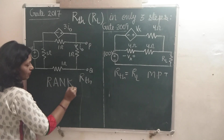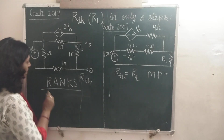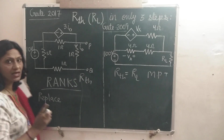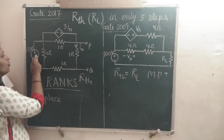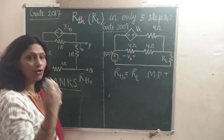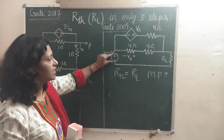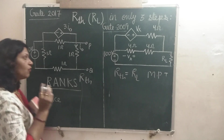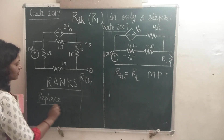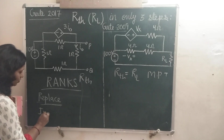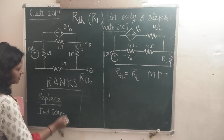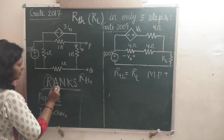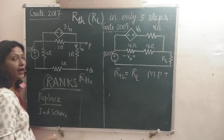You must remember these five words to solve the problem. First is R, that is for Replace. In the first step, we have to replace the independent voltage source by a short circuit, and if there is a current source, replace it with an open circuit. The R in RANX stands for the replacement of independent sources.